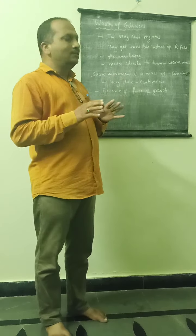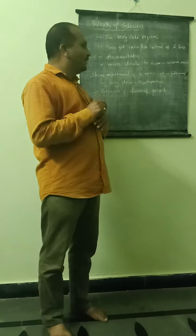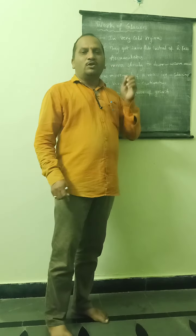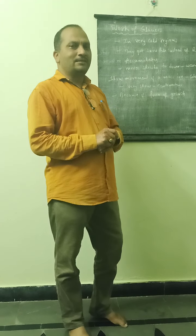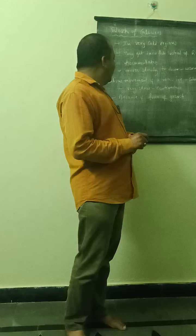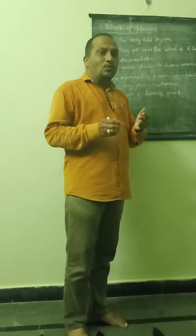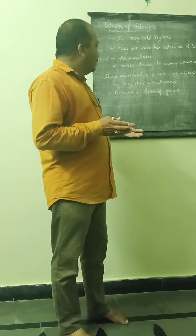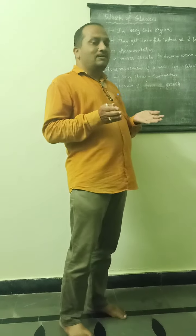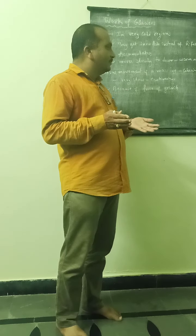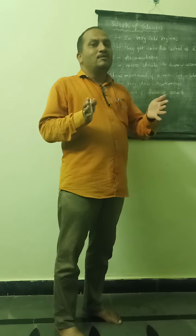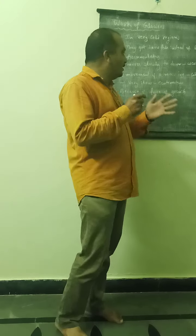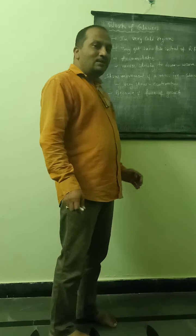This melted water forms a river. This is what we call glaciers. For example, our Ganga River originates at the Gangotri Glacier in the Himalayan ranges, as you studied in lower classes. The slow movement of a mass of ice is called a glacier.